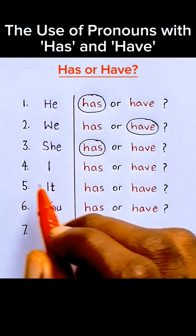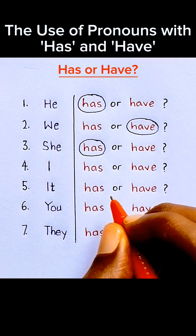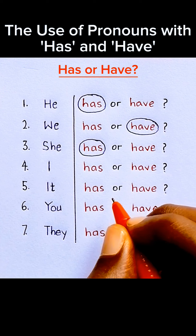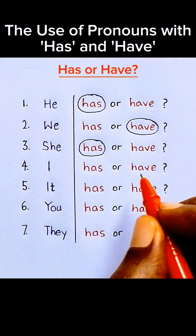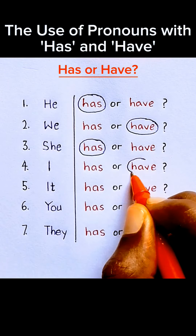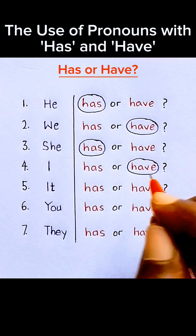Number four: 'I'. Now 'I' is a singular subject, but 'I' is the only exception in this rule. It is the only singular subject that goes with a plural verb, so it goes with 'have'. We say 'I have', not 'I has'.